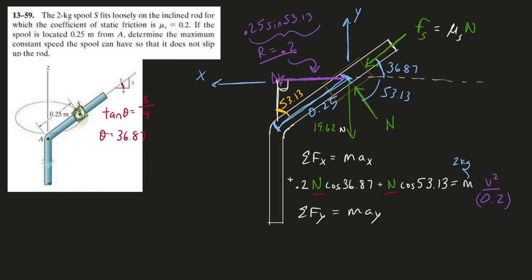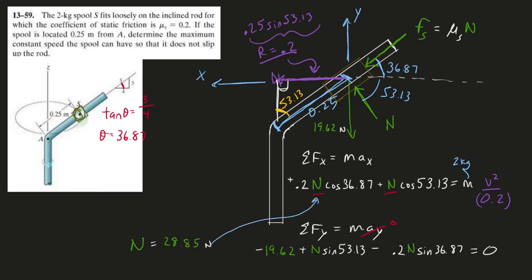So, doing my sum forces in the y I know that the acceleration in the y is 0 so when I sum my forces they should all equal 0. And I can crunch that out and figure out that my normal force will equal, we'll get a positive 28.85, which I can then just plug in here and figure out that speed v. And running that we'll get a 1.48 for that speed.